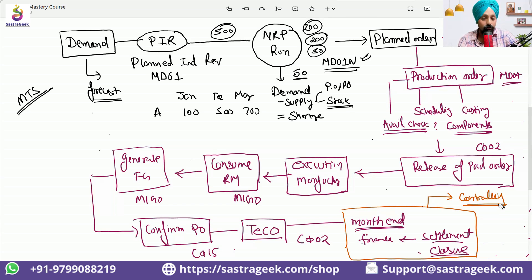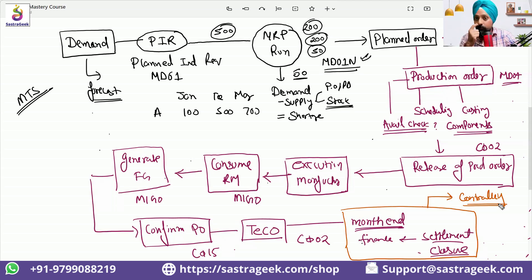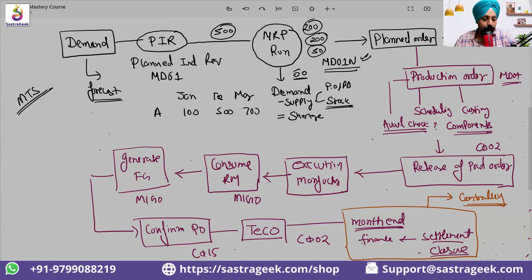I would be giving you an assignment today which we would be adding up, and you need to complete this assignment during the training — to find out what are the master data settings or configuration settings you need to do to achieve specific business scenarios. This is the end-to-end process for PP — the end-to-end PP business process.